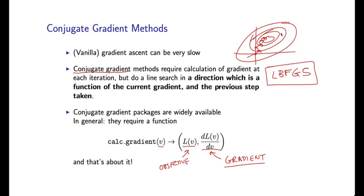And that's about it. So if you can implement functions L of v and dL by dv, this gradient function, given one of these existing packages, you can optimize L of v quite efficiently and find these maximum likelihood estimates.